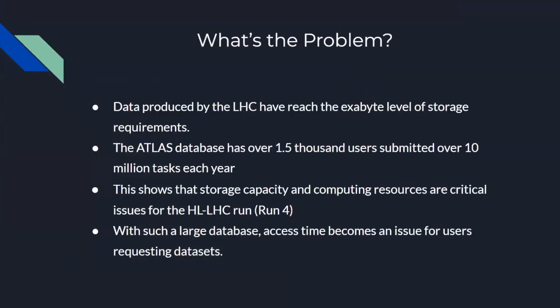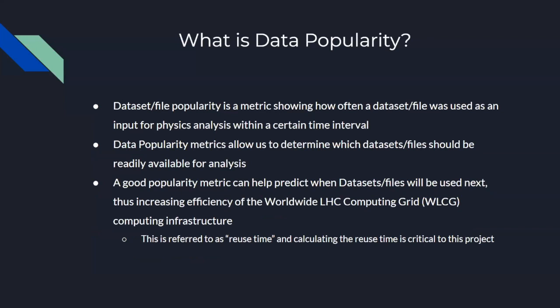So basically the problem is, is that we have a huge amount of data from the Large Hadron Collider from run three and definitely run four. And that results in over 10 million tasks being submitted each year, which means that we have to create an efficient method for storing each data set and file and making it efficient for people to request them and then do tasks on them. So what is data popularity? That is a crucial component of this project. Data popularity is basically a metric showing how often a data set or file is used within a certain time period.